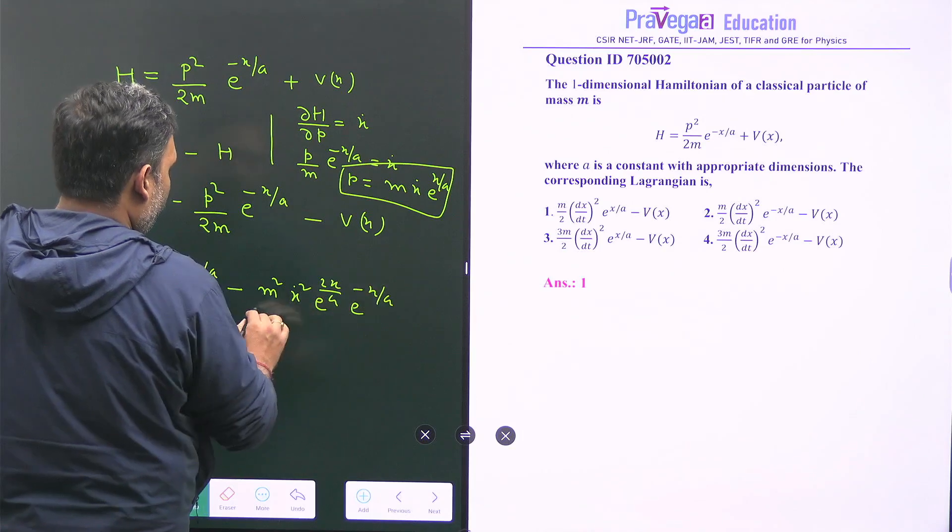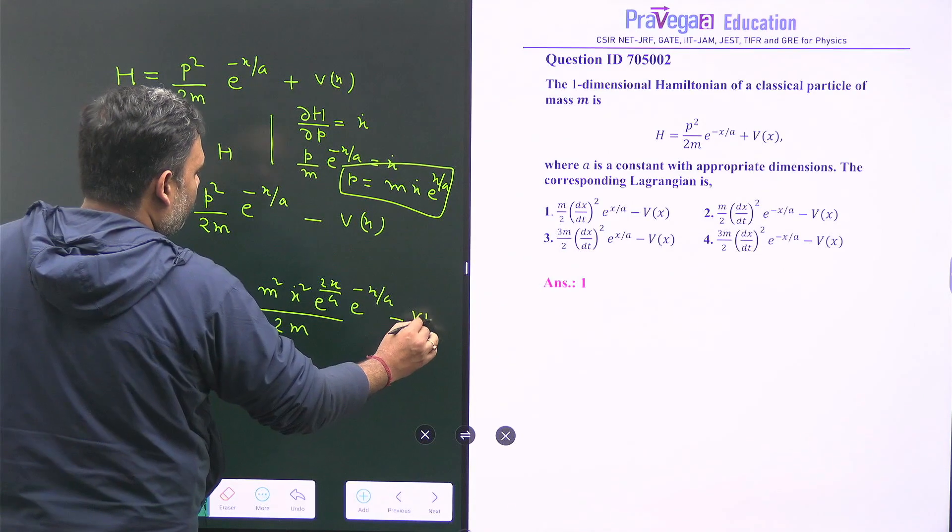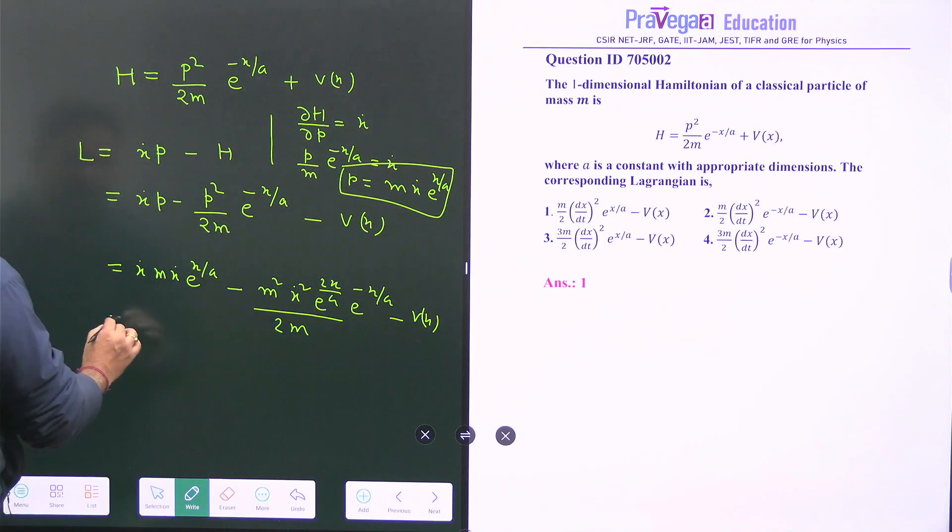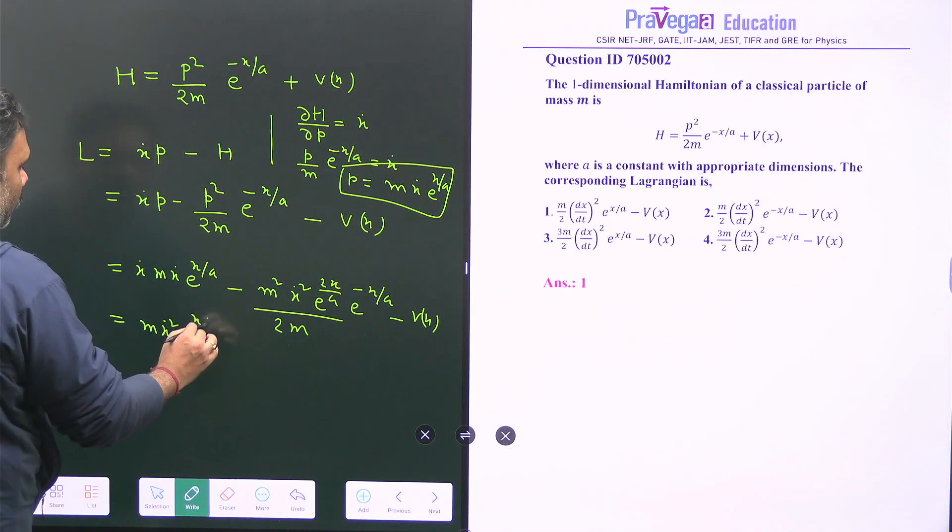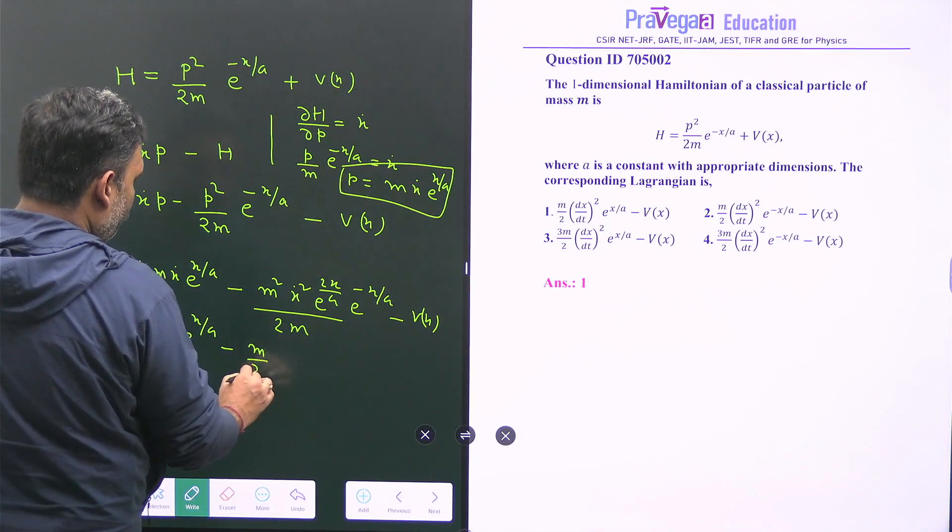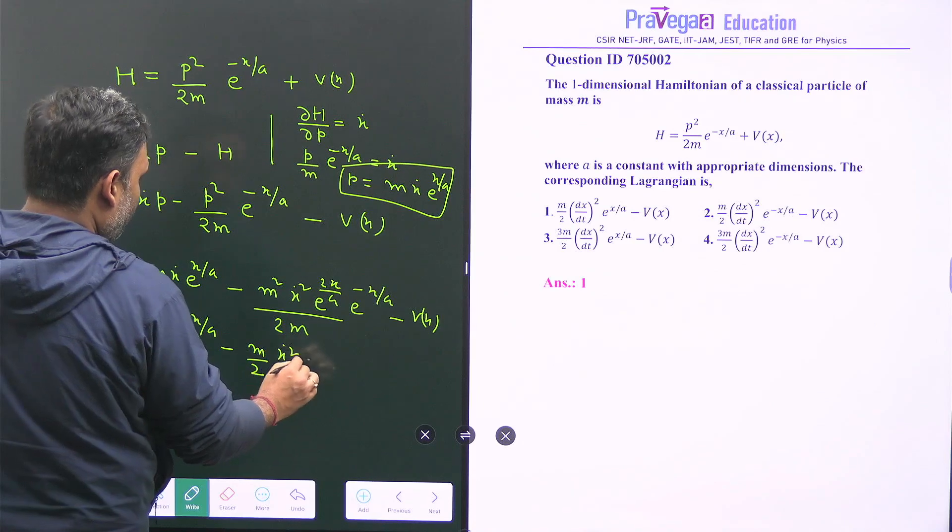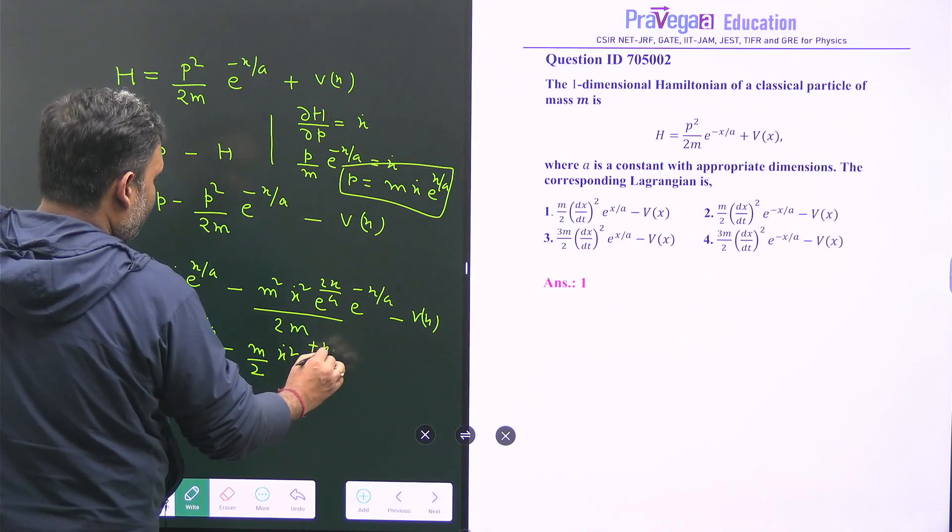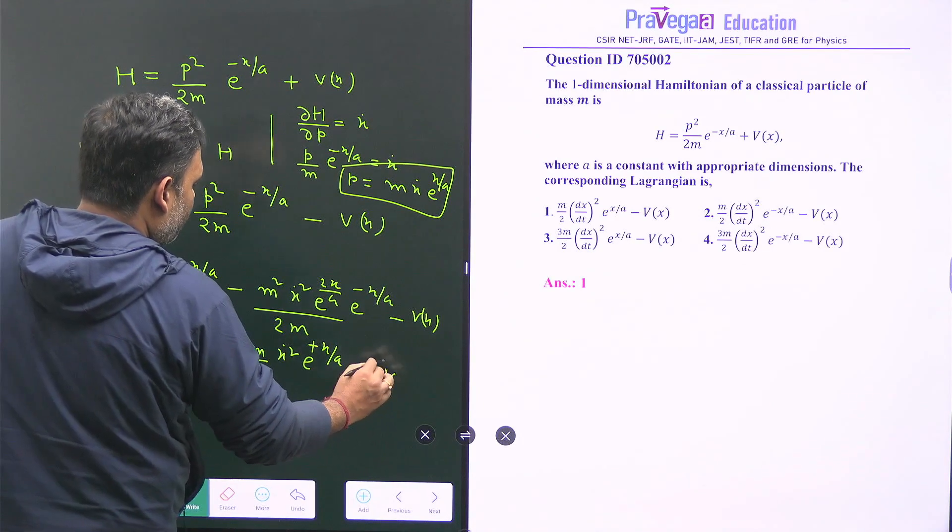And then we have m x dot square e to the power x upon a and here is minus m by 2 x dot square e to the power plus x upon a minus v(x).